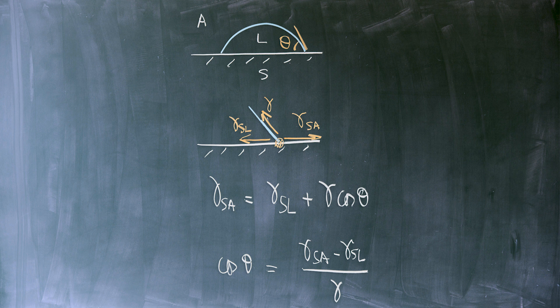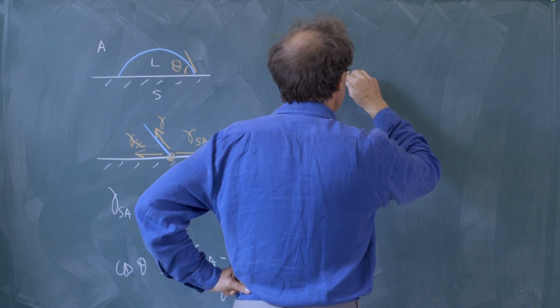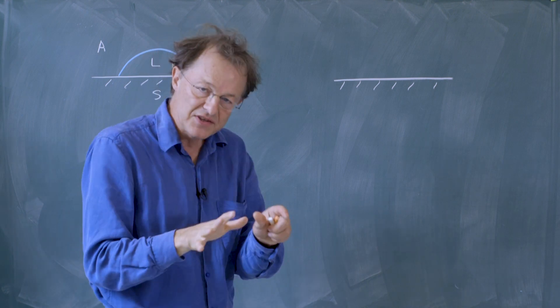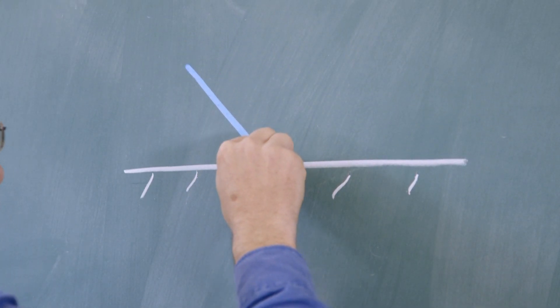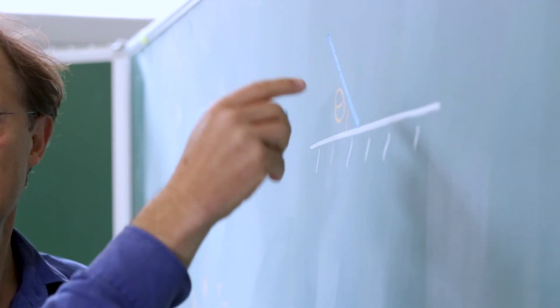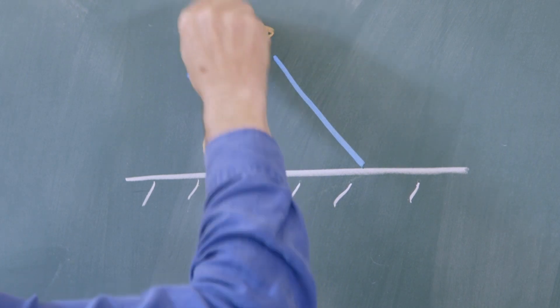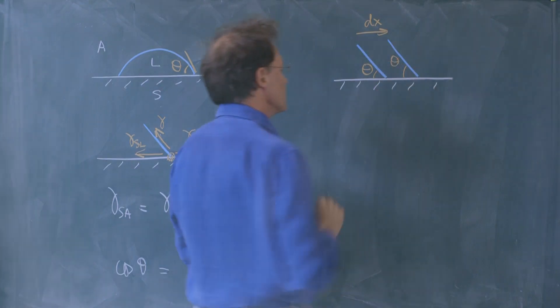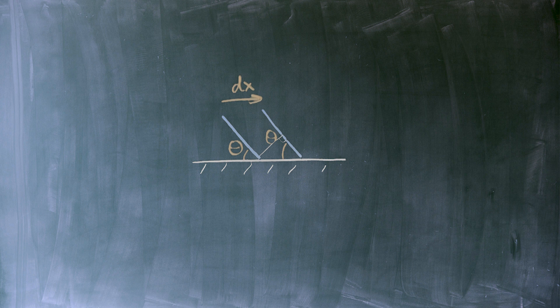This formula that we derived is so important that I think it's useful to derive it in another way. For that, we go back to energetic arguments. We have a solid. We start again this experiment where a drop is deposited, and as this drop is spreading, it somehow explores the solid. The contact line at some point is here with the angle theta, and it does a little jump to the right. This is a zoom in the contact line region. Because this little jump has a very small amplitude dx, the contact angle hardly changes.